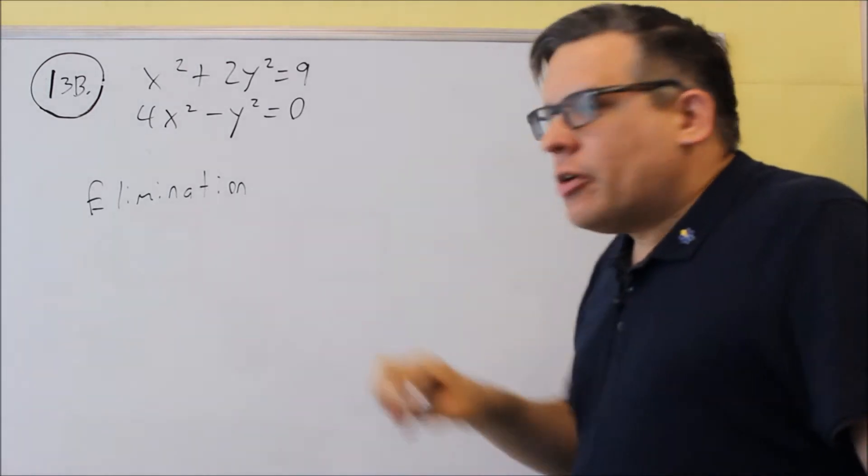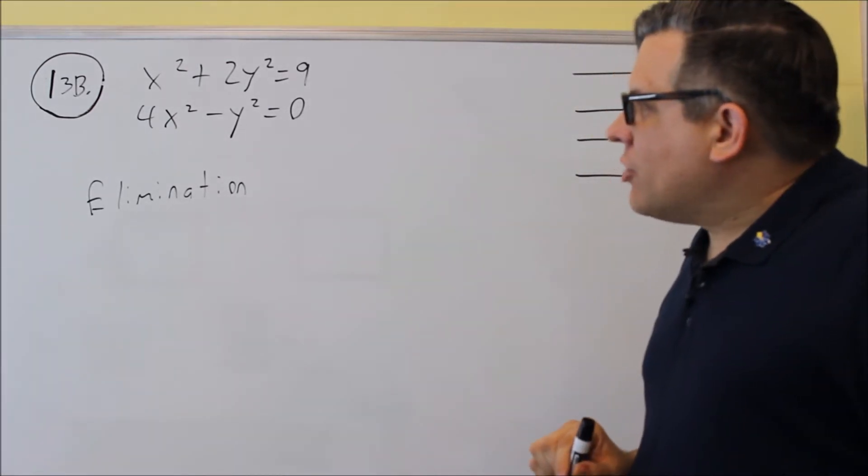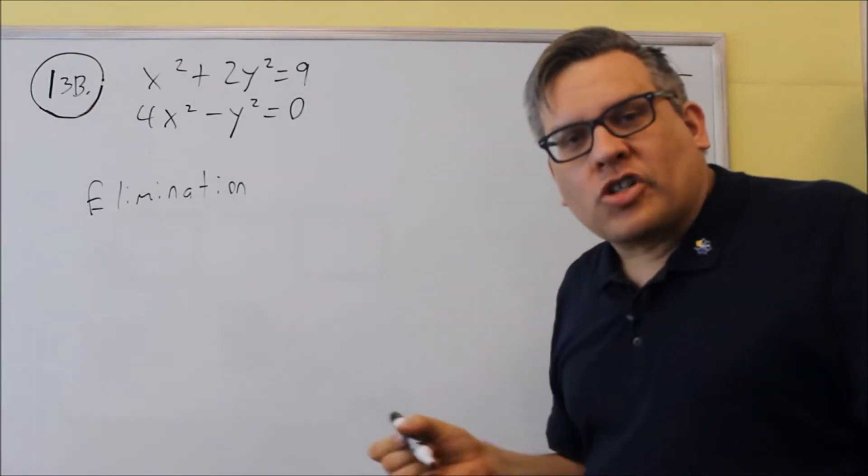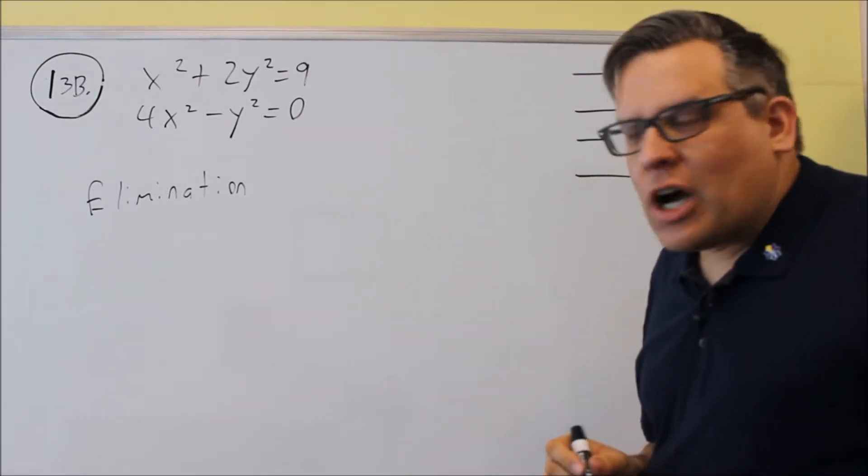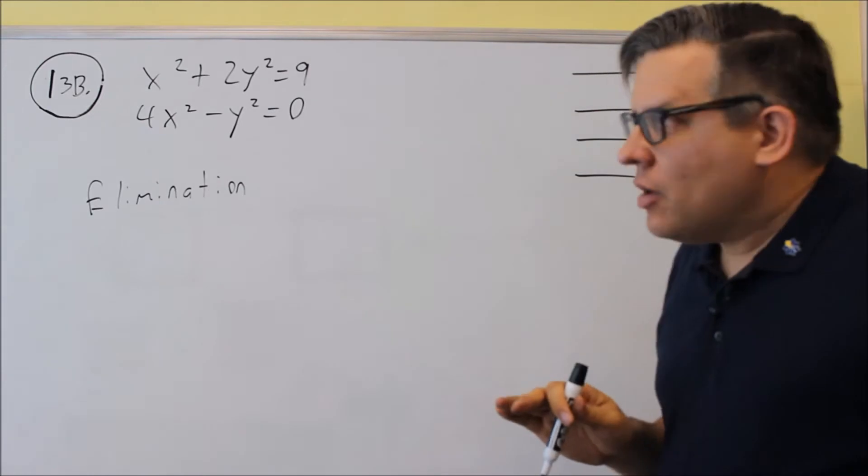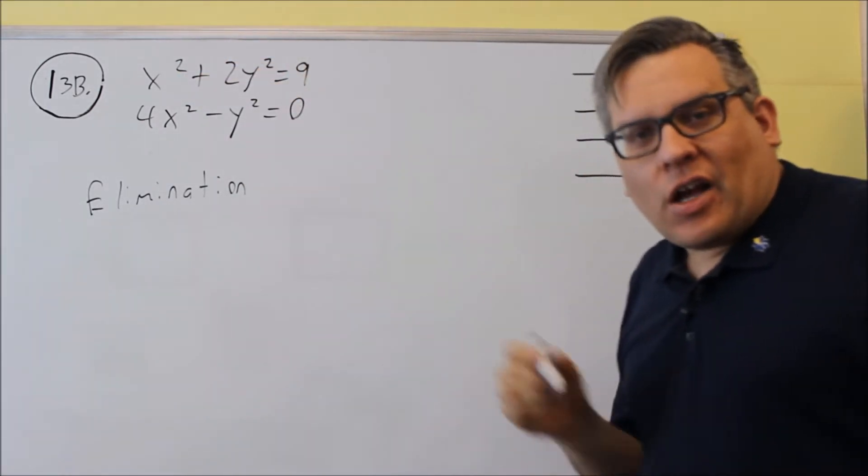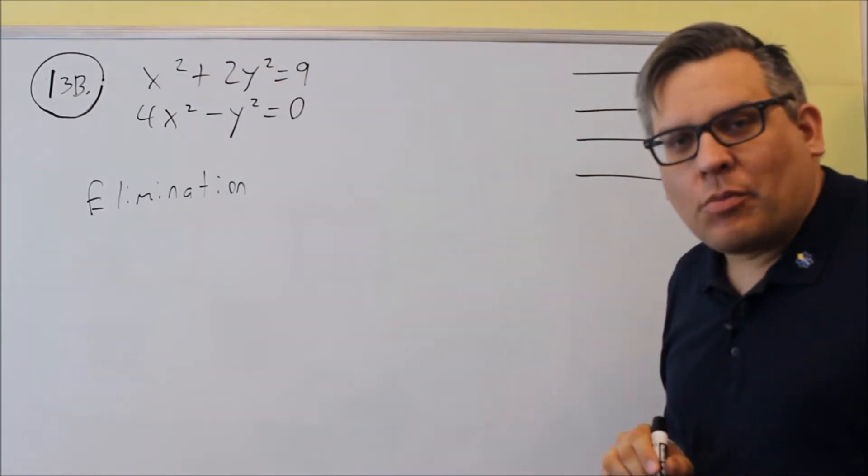So instead, I'm going to do it by elimination. Elimination means that you're going to multiply one or both equations by something and then add them together and you'll be able to get one of the variables to drop out. Now you can choose to eliminate either the x squares or the y squares, it doesn't really matter which one.